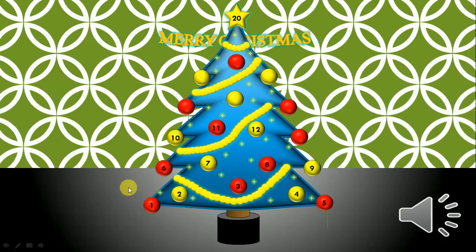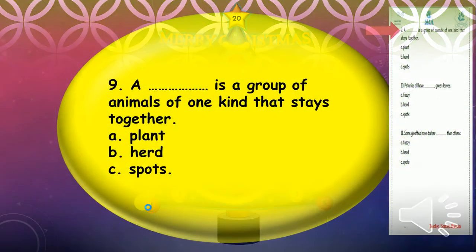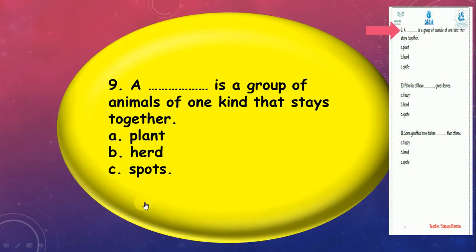Let's start. Number one: A what is a group of animals of one kind that stays together? Plant, herd, or spots? They stay together, move together, eat together, so herd, good job. It's a family of the same kind of animal.